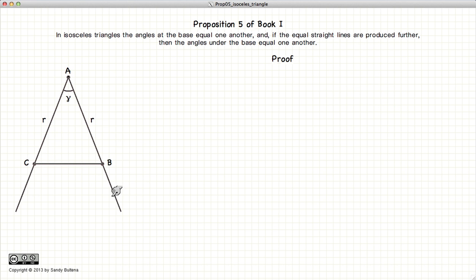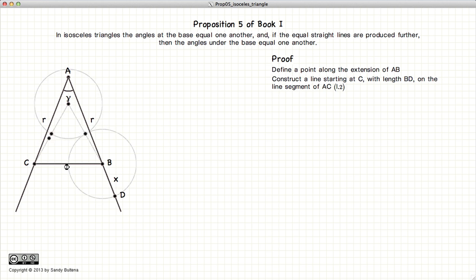The first thing we're going to do is define an arbitrary point D along AB, and its length will be x. Now using the methods described in Proposition 2, we're going to copy this length BD onto the point C, draw a circle, and define a point E, such that CE is going to be equal to BD. Now we're going to create a triangle AEB.